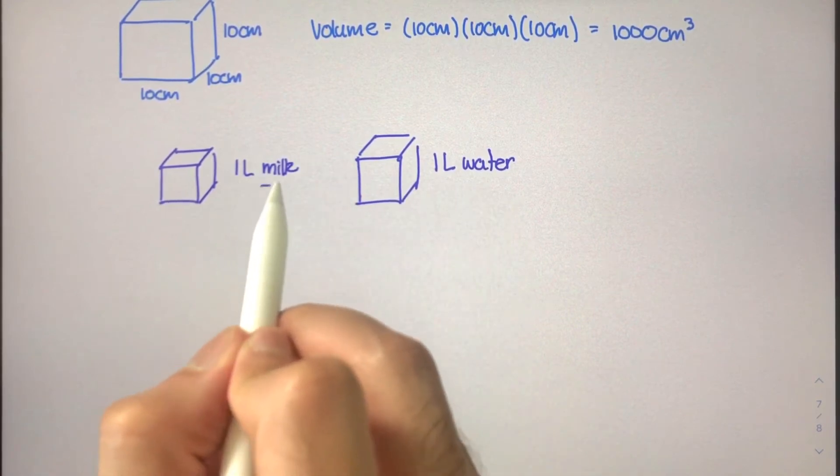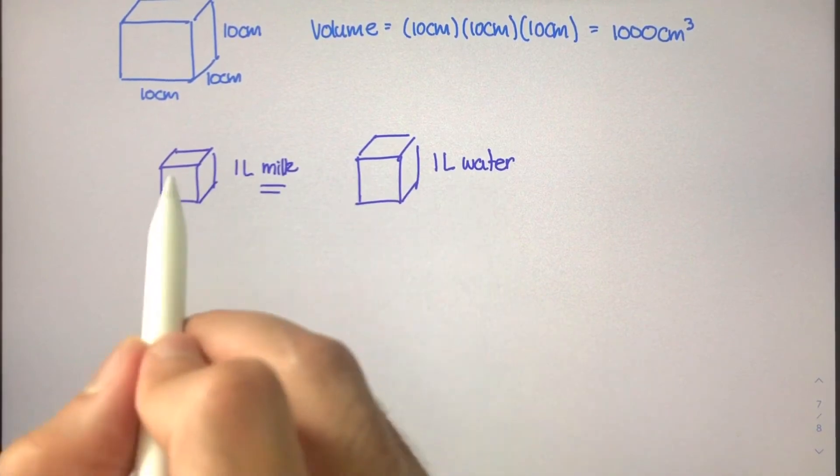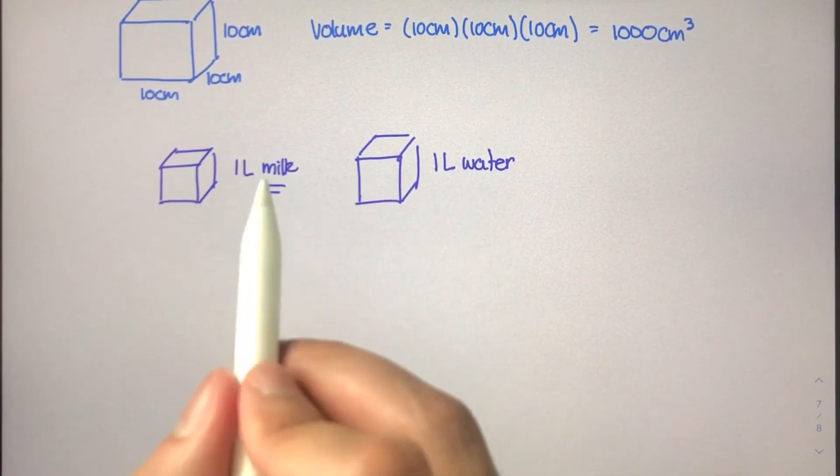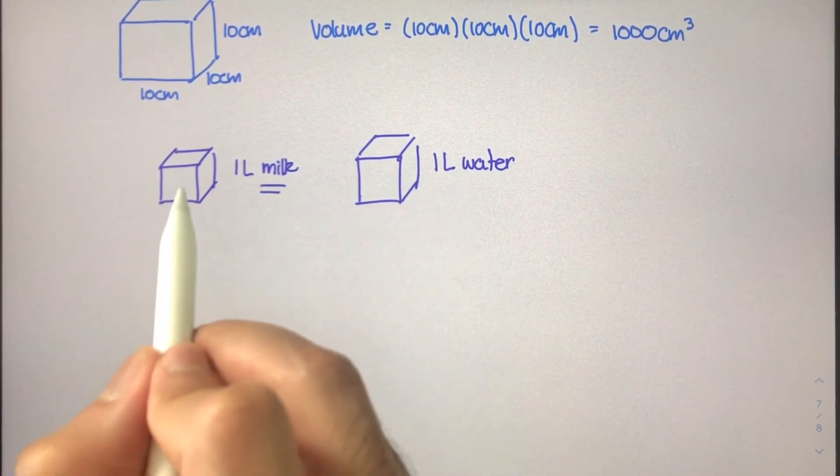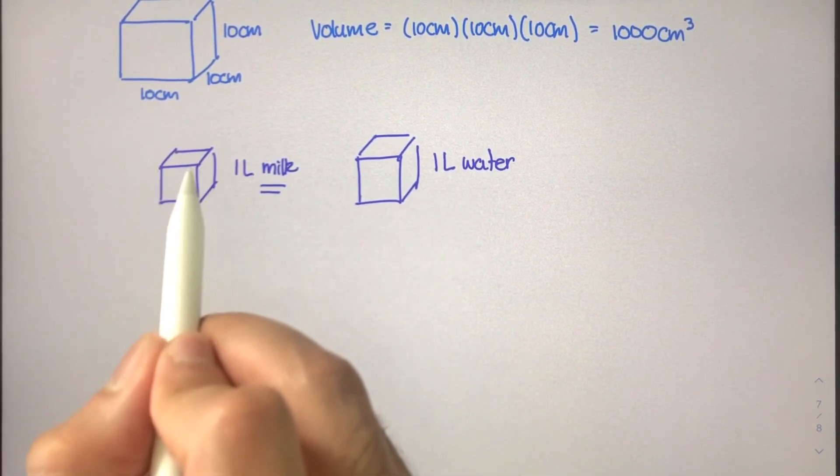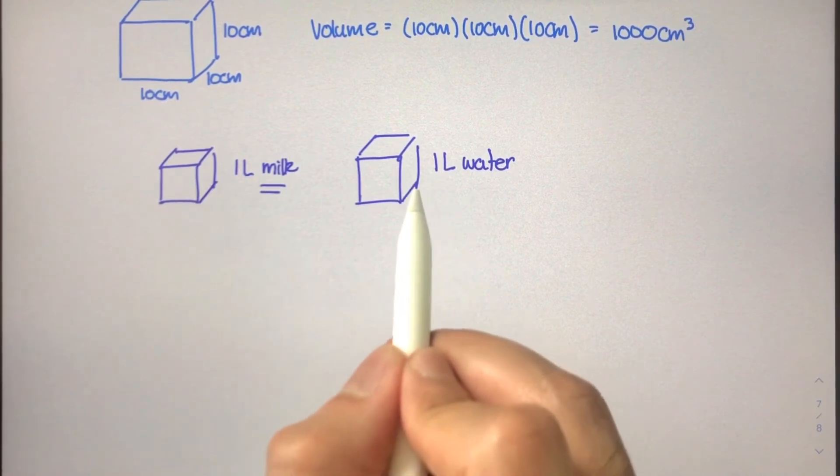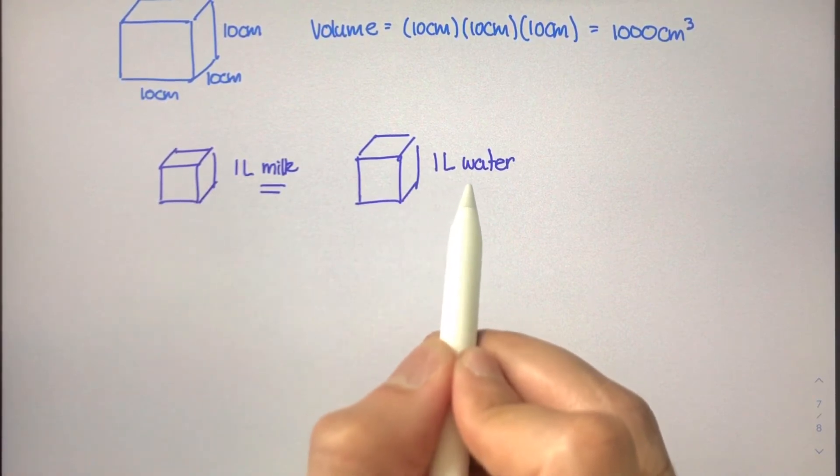We know that milk and water are not the same. In fact, milk is actually just a little bit heavier than water or more dense, and therefore we can safely assume that both milk and water have different masses. There's probably a little bit more mass in one liter of milk than there is in one liter of water.